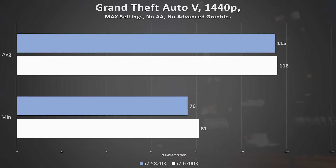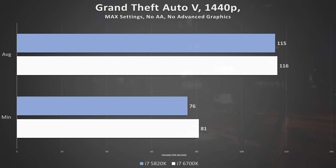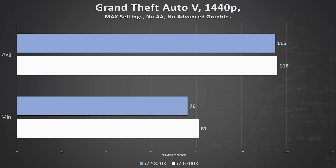Consider GTA V first — a great balance of CPU and GPU horsepower at a resolution that severely tugs on neither component. With equivalent specifications across the board save the CPU and motherboard, the 6700K pulls ahead ever so slightly. The most noticeable difference is in the minimums. Both benchmark runs were smooth and uninterrupted, and it's unlikely you'd be able to distinguish between the two — but a win's a win.